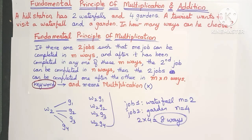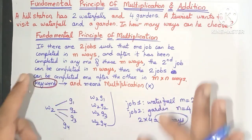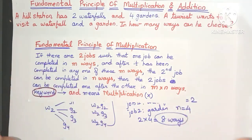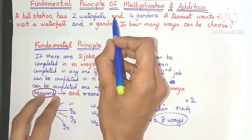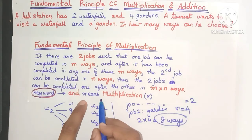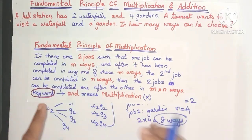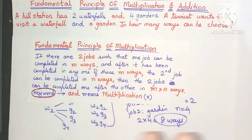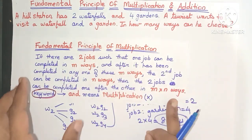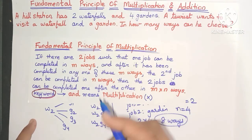One thing to note is that whenever you have two jobs in a question combined using the word 'and,' always remember the multiplication principle will come into play, because 'and' means multiplication. Also, the entire job is completed only if you complete all the sub-jobs.